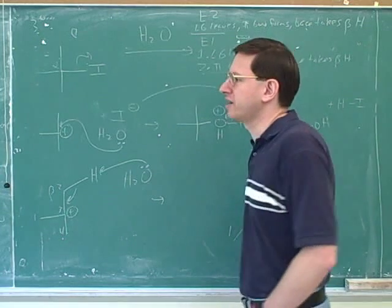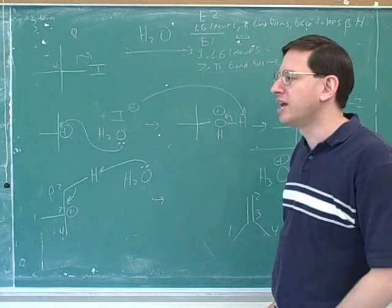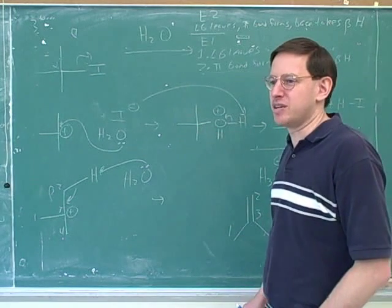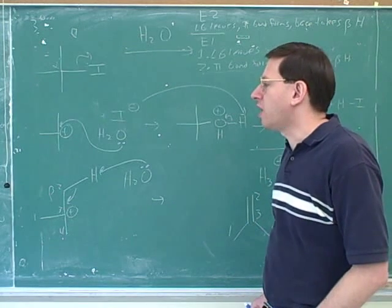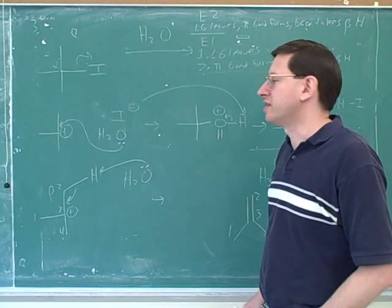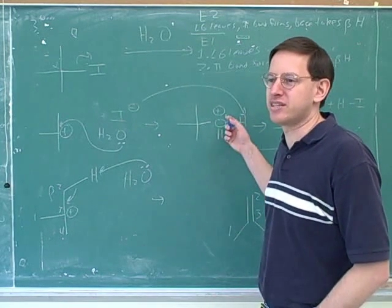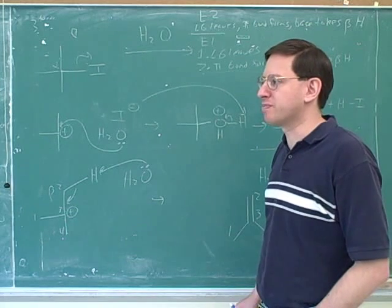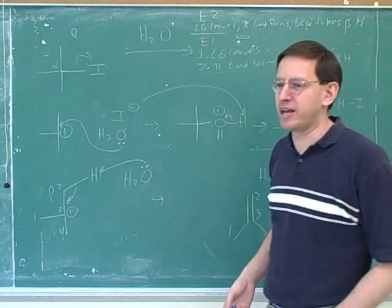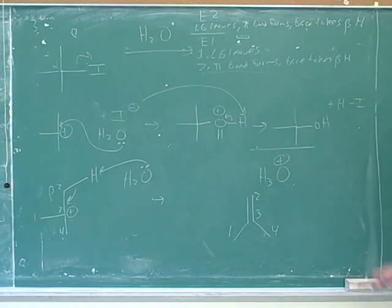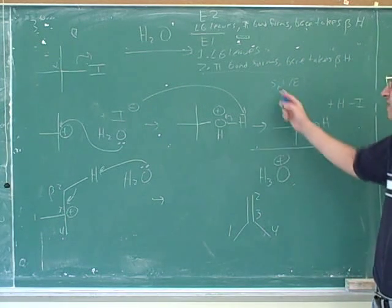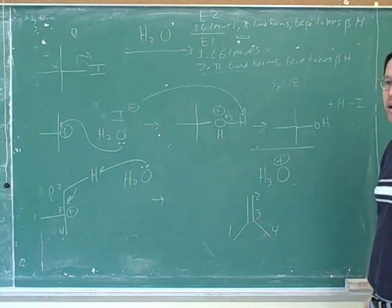How would you know when to draw just the SN1 product versus both the SN1 and the minor E1 product? You have to see what your instructor likes. If the problem says 'draw all possible products' he probably wants both SN1 and E1. If it says 'draw the major product' maybe he only wants SN1. If it says 'draw the substitution product' do SN1, and 'draw the elimination product' do E1. Any time the table says SN1/E1, you'll get a mix — approximately 95% SN1 and 5% E1.